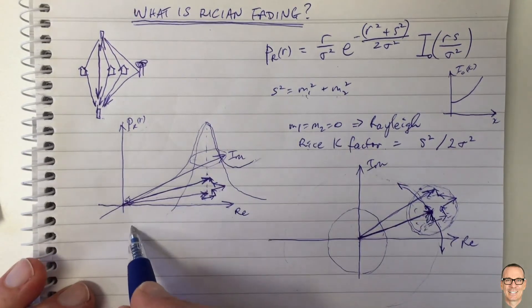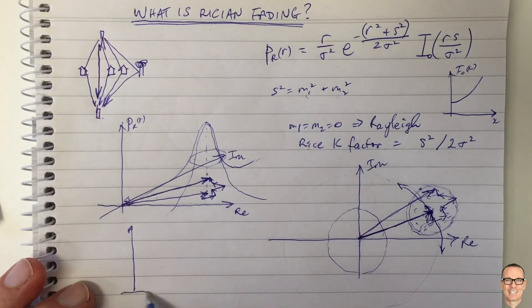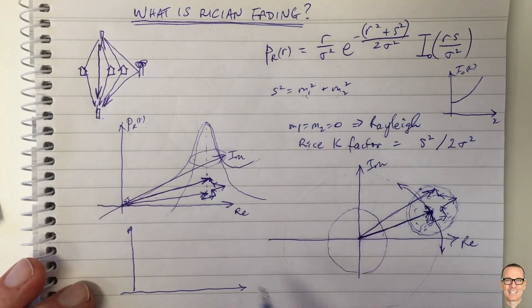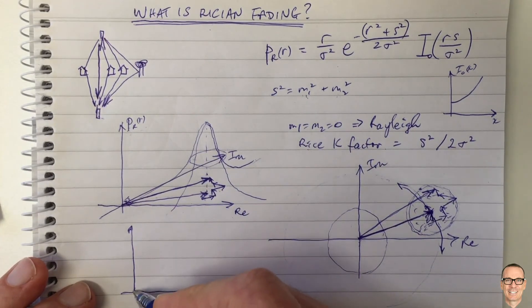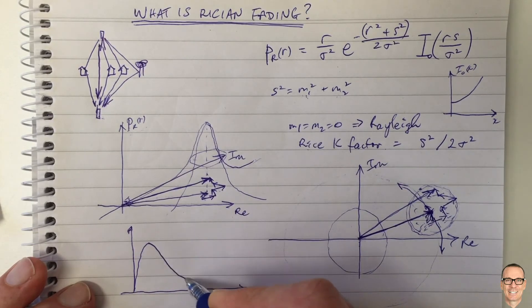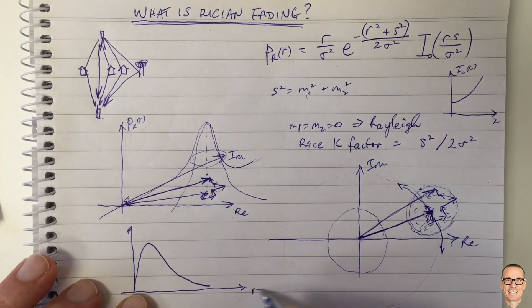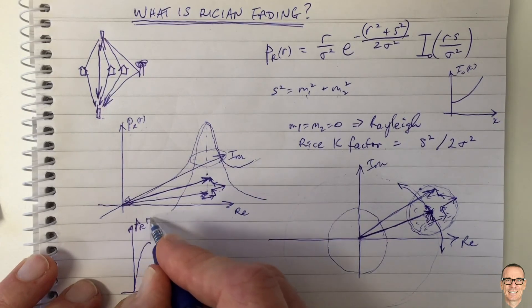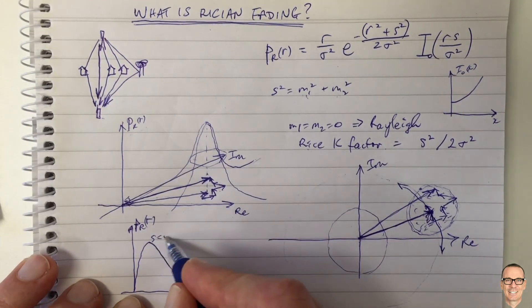I might just finally draw some examples of the PDFs for different values of s. And so for s equals zero, of course, we get exactly the Rayleigh curve. This is R, and this is s equals zero.